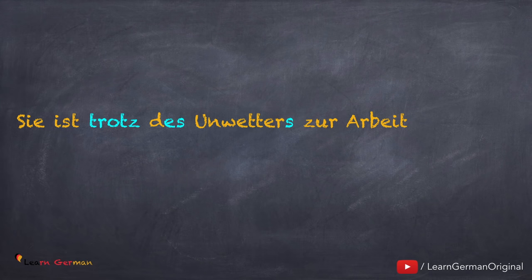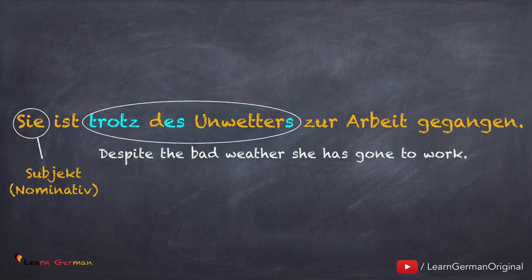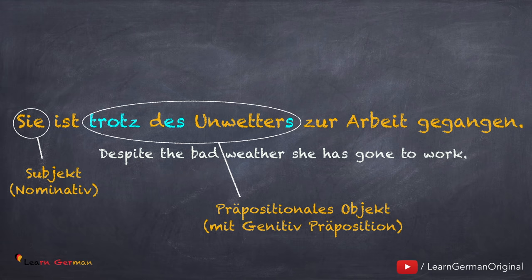Hier ist der erste Satz: Sie ist trotz des Unwetters zur Arbeit gegangen. In diesem Satz ist 'sie' das Nominativsubjekt. 'Trotz des Unwetters' ist das präpositionale Objekt mit der Genitivpräposition 'trotz'. Weil das eine Genitivpräposition ist, benutzt man den Genitivartikel und das Nomen bekommt eine Genitivendung. Statt 'das Unwetter' schreiben wir 'des Unwetters'.